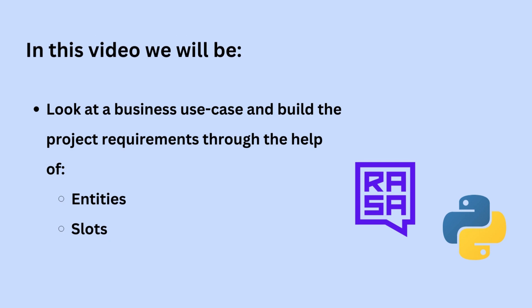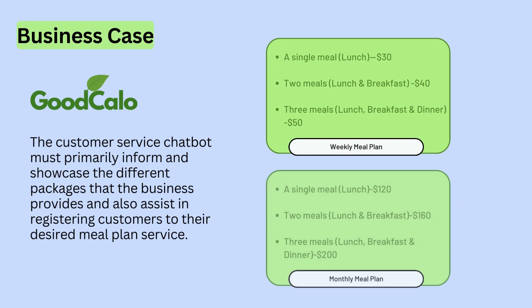Based on that business use case, we'll deduce some project requirements that we need to achieve through entities and slots. One of our clients is a manager of a hypothetical business that specializes in monthly or weekly freshly prepared meal plans known as GoodCalo. Their manager wants an assistant to help streamline their processes, and specifically mentions that the customer service chatbot must primarily inform and showcase the different packages the business provides.